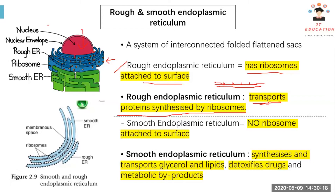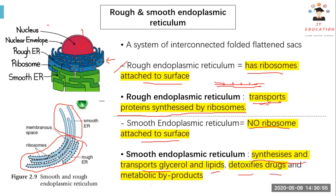The smooth endoplasmic reticulum has no ribosomes attached to its surface, making it smooth. Its functions include synthesizing and transporting glycerol and lipids, and also detoxifying drugs and metabolic products.